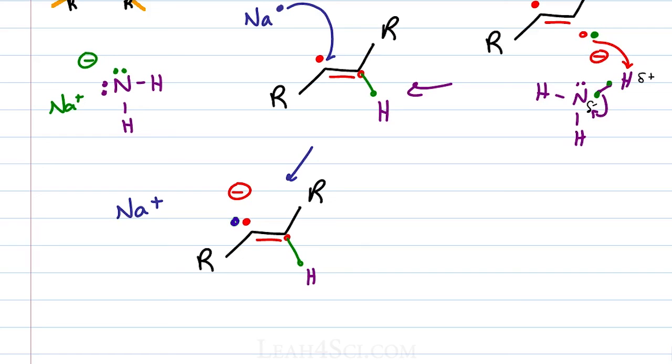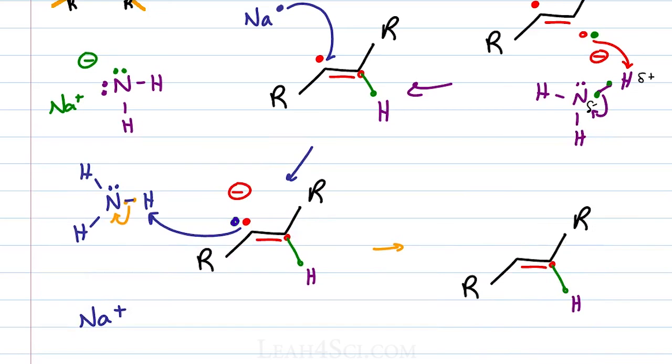But carbon is not quite satisfied because a negative charge on carbon is still no good so it reaches out for hydrogen on another ammonia floating around in solution, breaking the bond between hydrogen and nitrogen collapsing those electrons onto nitrogen. And this gives us our final product.